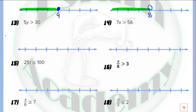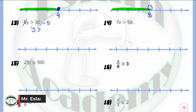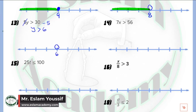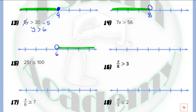Next, 5y more than 30. 5y means 5 times y. We divide by 5. So y is now more than 30 divided by 5, which equals 6. Because it is more than, it is an open circle, and we shade the part which lies at the right.